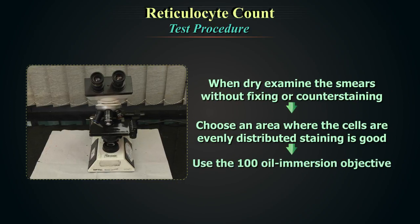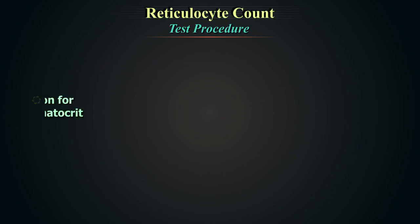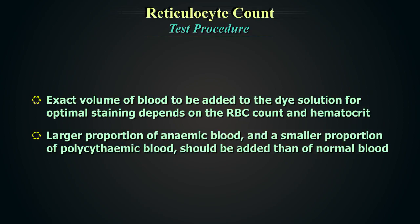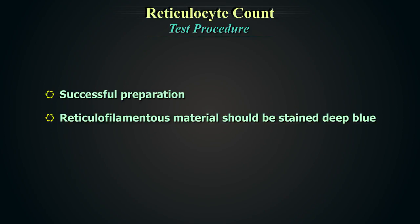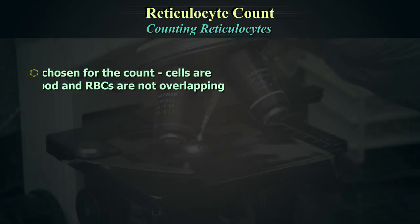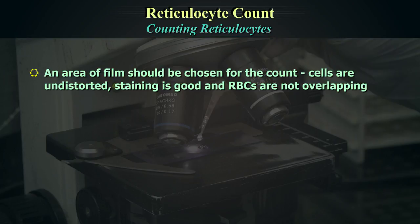The exact volume of blood added to the dye depends on the red blood cell count and/or hematocrit. A larger proportion of anemic blood and a smaller proportion of polycythemic blood should be added compared to normal blood. In a successful preparation, the reticulofilamentous material should be stained deep blue and non-reticulated cells in diffuse shades of pale greenish blue. Choose an area of film where cells are undistorted, staining is good, and RBCs are not overlapping.